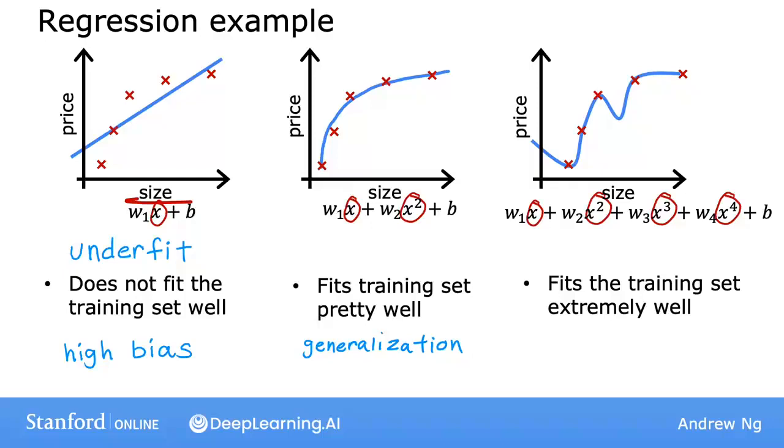But this is a very wiggly curve. It's going up and down all over the place. And if you have this house size right here, the model would predict that this house is cheaper than houses that are smaller than it. So we don't think that this is a particularly good model for predicting housing prices. The technical term is that we'll say this model has overfit the data, or this model has an overfitting problem. Because even though it fits the training set very well, it has fit the data almost too well, hence it's overfit. And it does not look like this model will generalize to new examples it has never seen before.